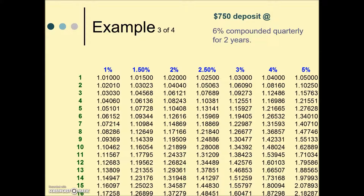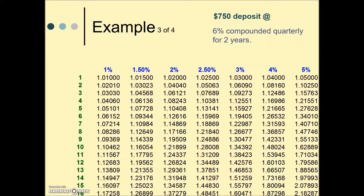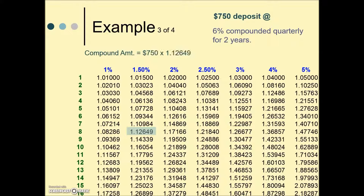In this next example, we still have $750 but this time at 6% compounded quarterly for two years. We need to determine the interest rate per compounding period, i, and n, the number of compounding periods. 6% compounded quarterly means we take 6% divided by 4, giving us 1.5%, so we'll use the 1.5% column. For n, two years compounded quarterly gives two times four, or 8 compounding periods. We read across that row to where it intersects our column, then multiply that value by our principal to get the total amount.